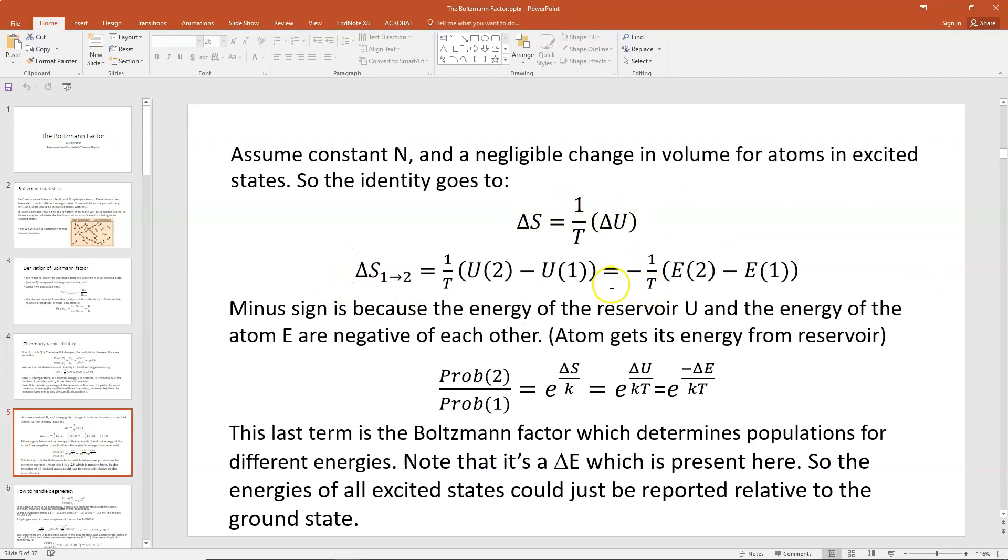So delta S = 1/T times delta U. If I write this out, delta S = 1/T times (U_2 - U_1). Now remember, if the reservoir loses energy, the atom gains it and vice versa. So that means that if you're looking at a specific atom, you could write the energy levels change for that atom. So delta U would be minus delta E, and that means we would have minus 1/T times delta E would be equal to delta S. Because the energy of the reservoir U and the energy of the atom E are flipped signs from each other, the atom gets its energy from that reservoir.